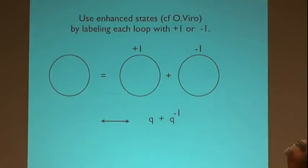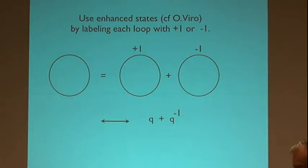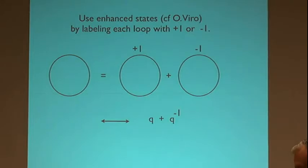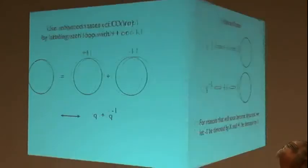I'll be using enhanced states, introduced into this situation by Viro, by labeling each loop with a plus 1 or a minus 1. The value of a loop, instead of being q plus q-inverse, is either q or q-inverse depending on whether it's labeled plus 1 or minus 1. You expand the bracket with states that have their loops labeled plus or minus 1, and you get a sum of monomials as a result.